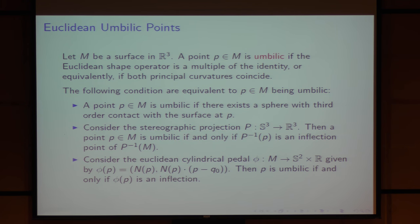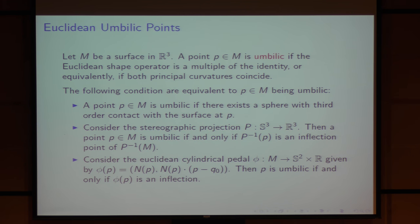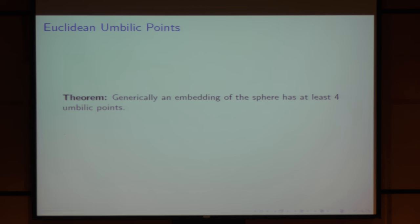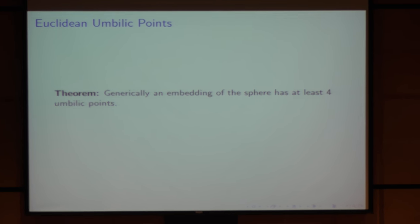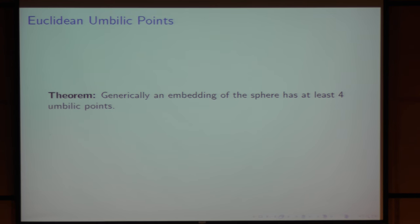Another equivalence: you can consider the Euclidean cylindrical pedal, which involves the normal and the distance from a given point Q0. Then P is umbilic if and only if the image of P is an inflection of the cylindrical pedal. It is also known that generically an embedding of the sphere has at least four umbilic points.